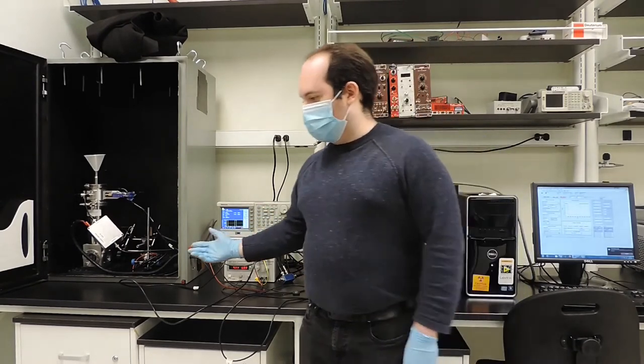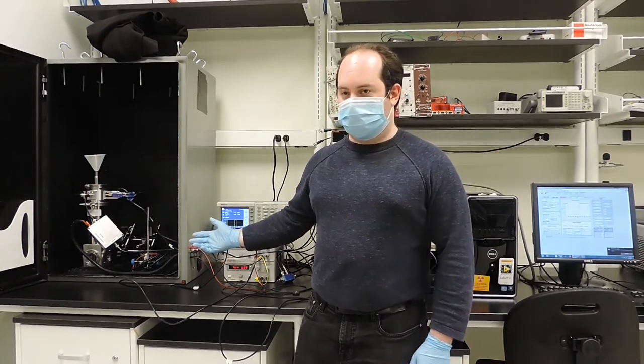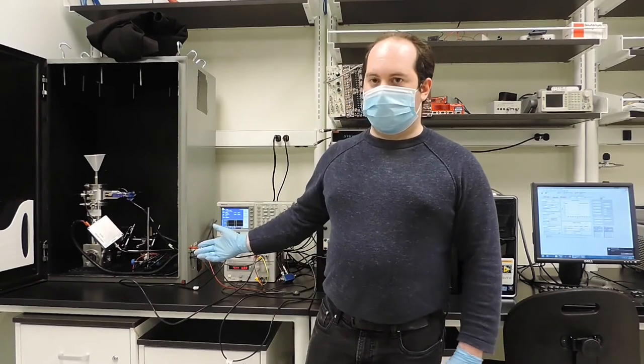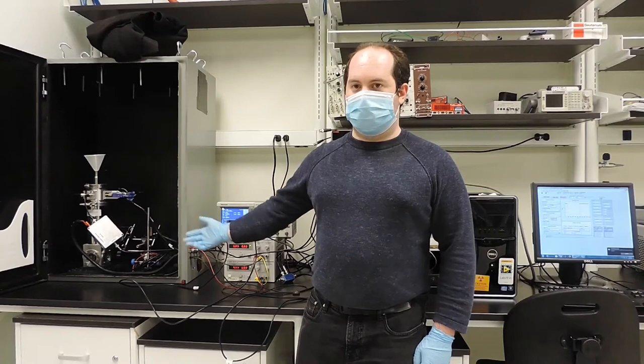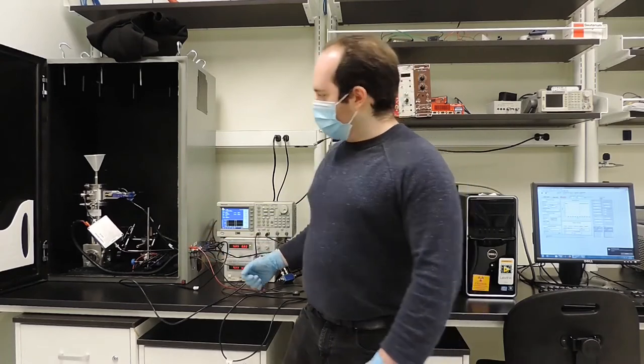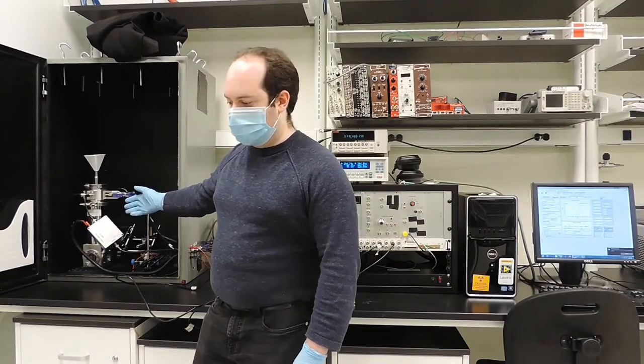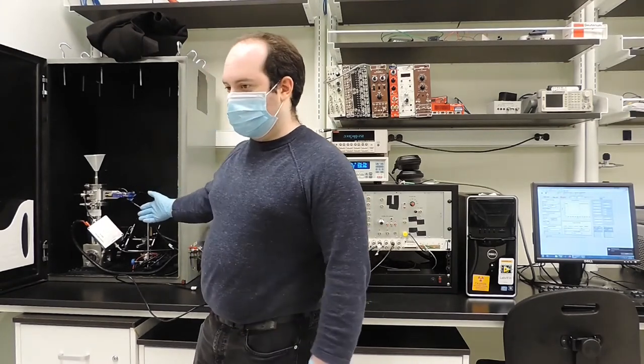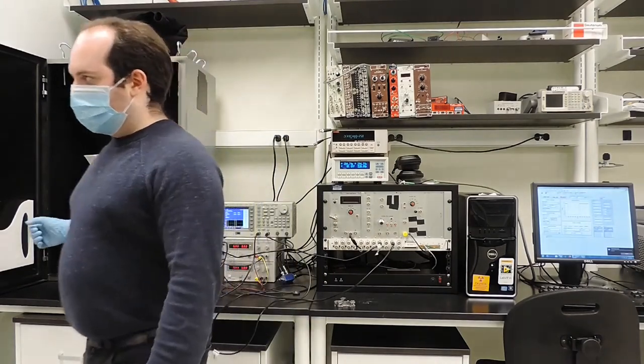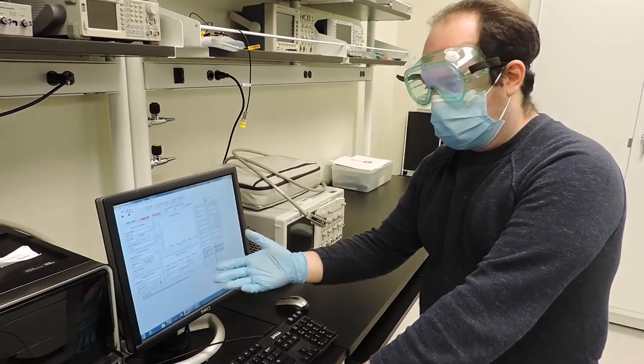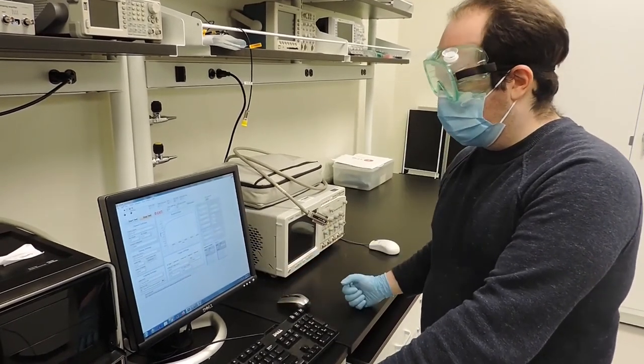Over here we have the setup that we use for photo-induced current transient spectroscopy, and that is a procedure we do to characterize the defect structure in our semiconductor materials. The main component of this setup is the cryostat here. First thing we do is drop down the temperature to liquid nitrogen. Here we have the data acquisition system connected to our computer that records our results.